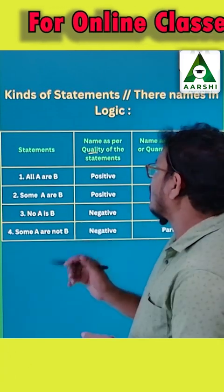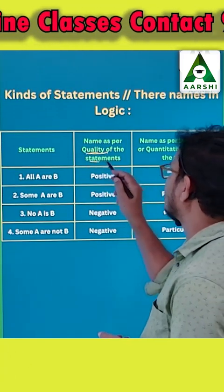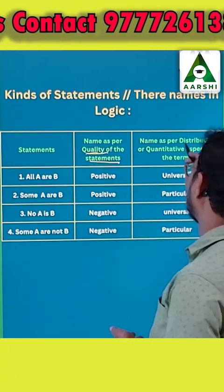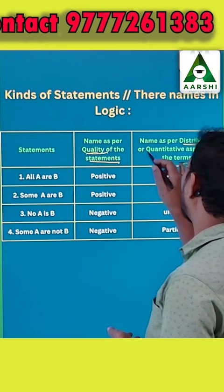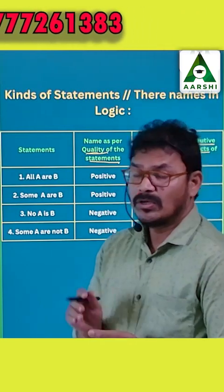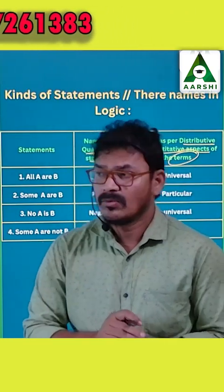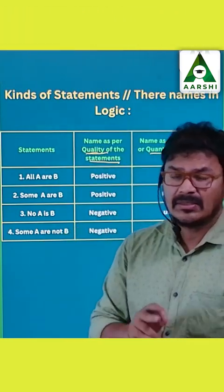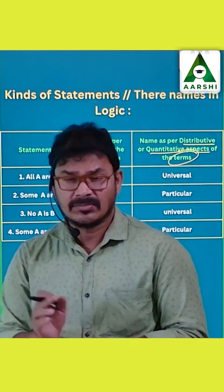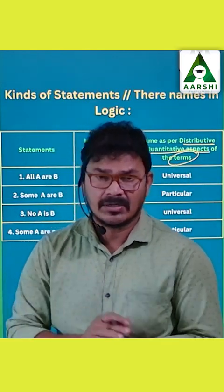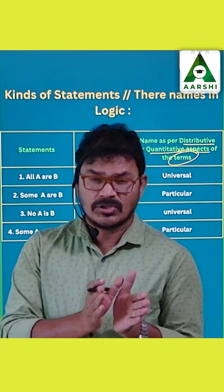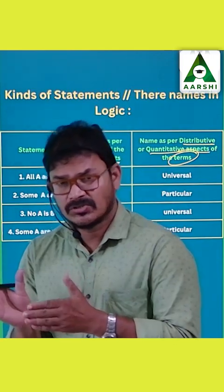The quality of the statement refers to the distributive and quantitative aspects of the terms in the statement. The subject term and the predicate term form the subject structure and the predicate structure of the statement.